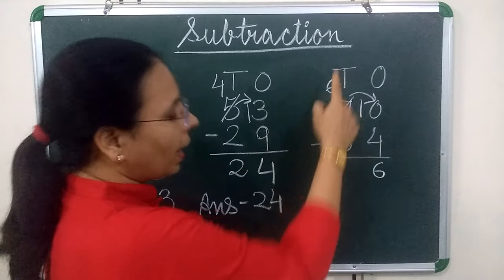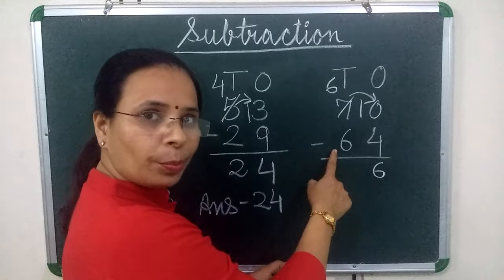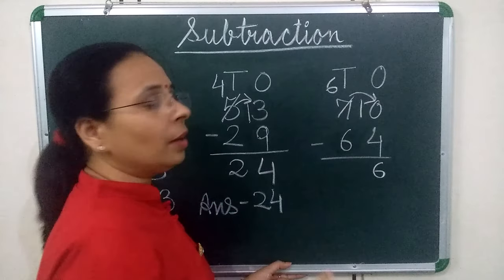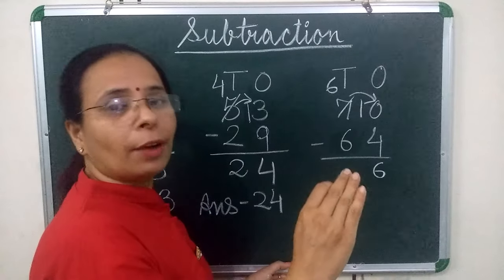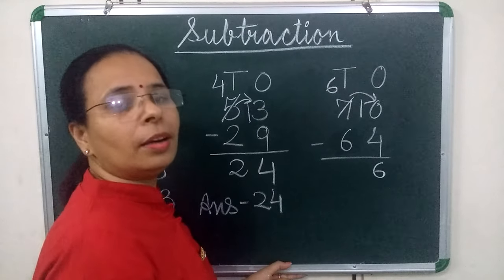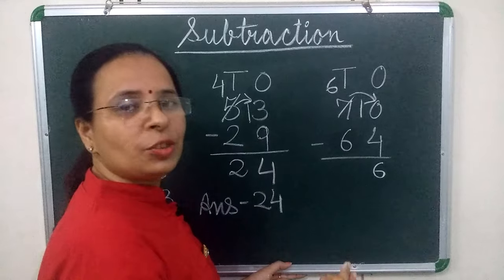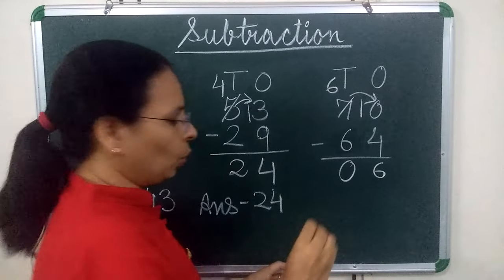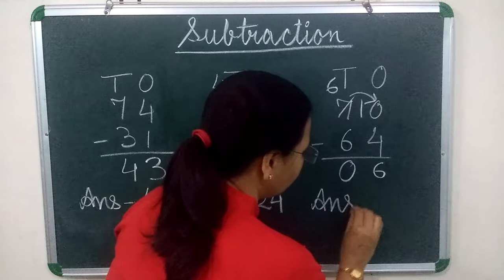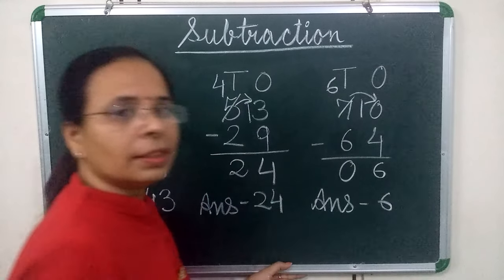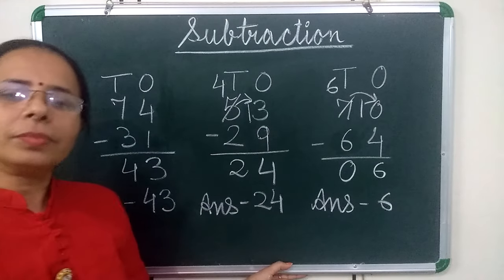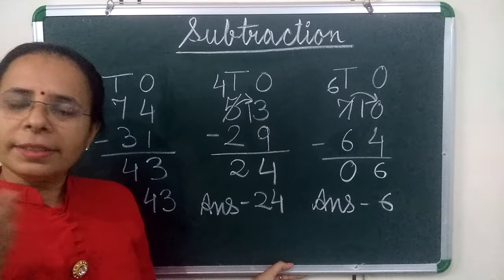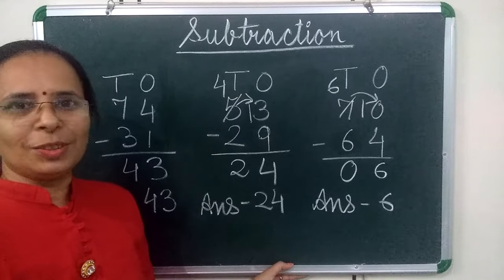Now children see, at 10th place we have to subtract 6 from 6. Always remember, same number, when we have to subtract same number, answer always be 0. So we will write here 0. So our answer is 6. Children, you can easily do any sum, any subtraction sum using this method. Thank you.